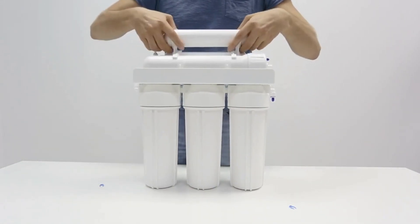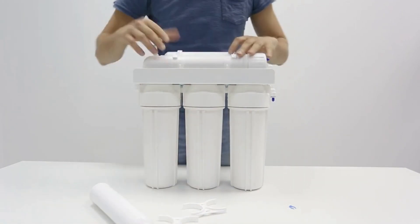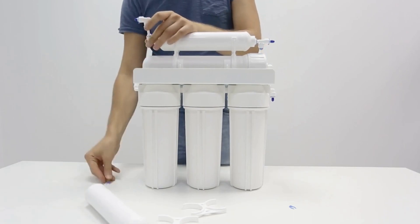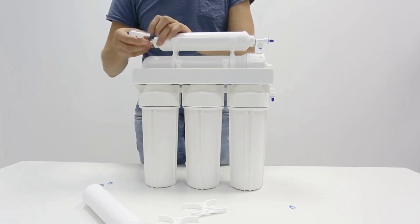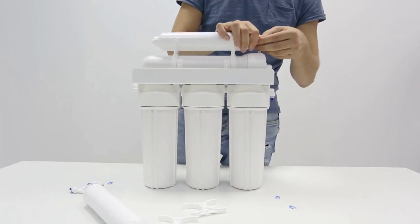Whether you have a whole house RO system or a point-of-use application, flushing can be done with a few simple steps. There are two general approaches you can take when flushing your RO membrane at home: using a flush kit or doing it manually without one. Let's dive into each method.